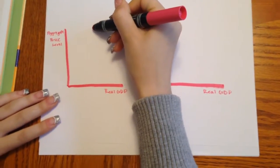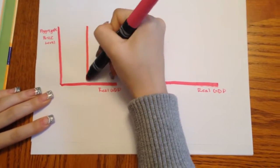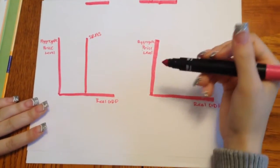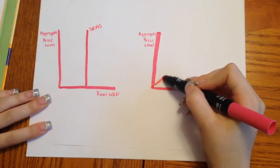And in the Classical, it just goes straight up and down. Whereas in the Keynesian, it's an upward sloping line.